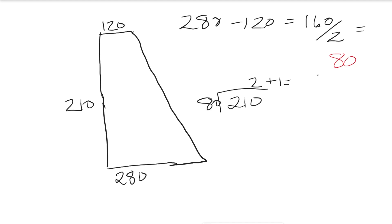So we're going to be working with 2 rounds and 3 rounds. There's going to be a set of increases made every second round and a set of increases made every third round. But now we need to find out how many times we work every second round and how many times we work every third round.